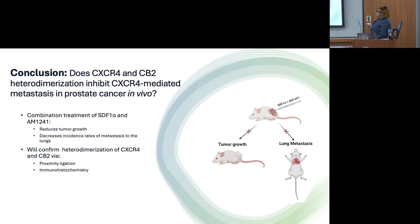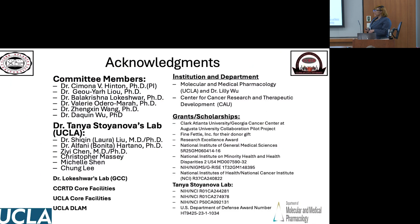Overall, we can conclude that we can reduce tumor growth through this combination treatment group, as well as decrease the incidence rates of lung metastasis. I still need to confirm the actual expression of CXCR4 and cannabinoid receptor 2 in these tissues, as well as proximity ligation, to further confirm whether or not this heterodimer pair was actually formed. I would like to acknowledge Clark Atlanta University, my committee members, Dr. Sorokina's lab at UCLA, the biology department at Clark Atlanta, the molecular and medical pharmacology department at UCLA, and all the grants that supported the research.